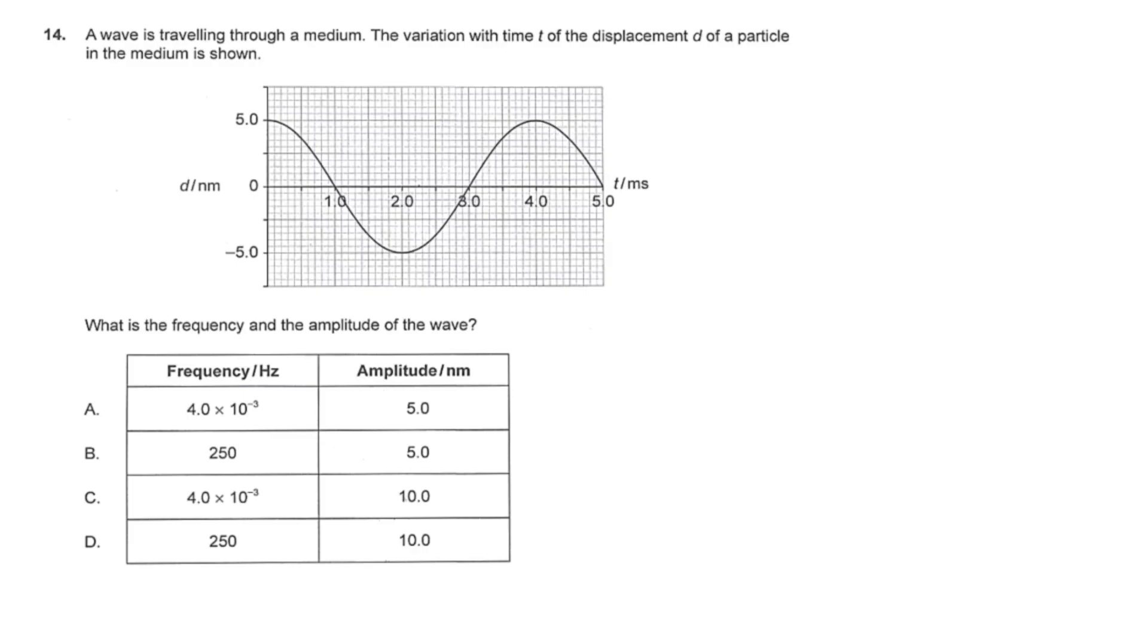IB Physics May 2025, time zone 2, SLP 1A, question 14. A wave is traveling through a medium. The variation with time t of the displacement d of a particle in the medium is shown. What is the frequency and the amplitude of the wave?